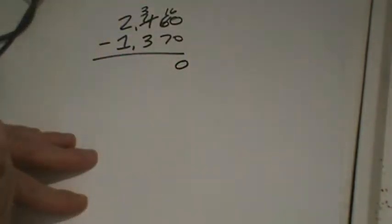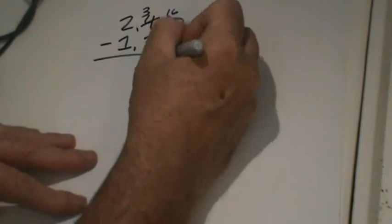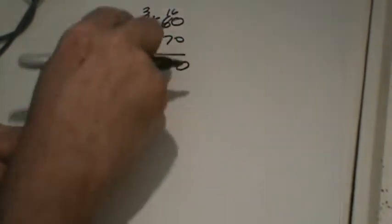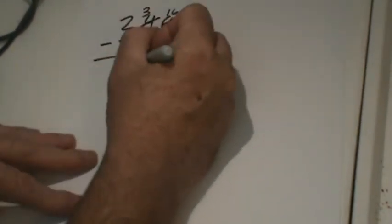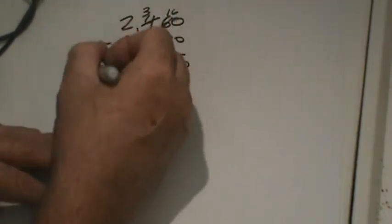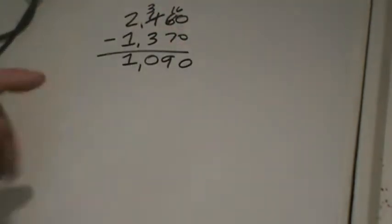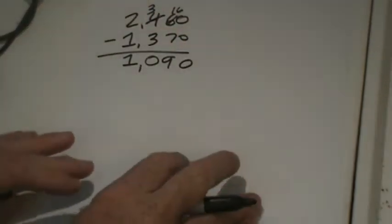We need some help here. That'll become three hundreds. This will become 16 tens. 16 tens minus seven tens is nine tens — ninety. Three hundreds minus three hundreds is zero. And two thousands minus one thousand is one thousand. And there's your answer to letter A.